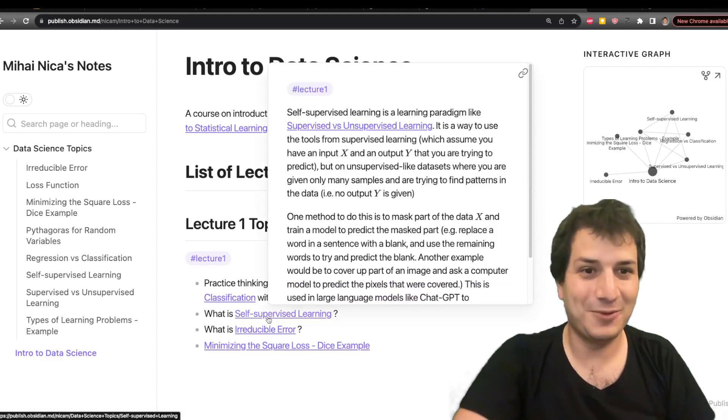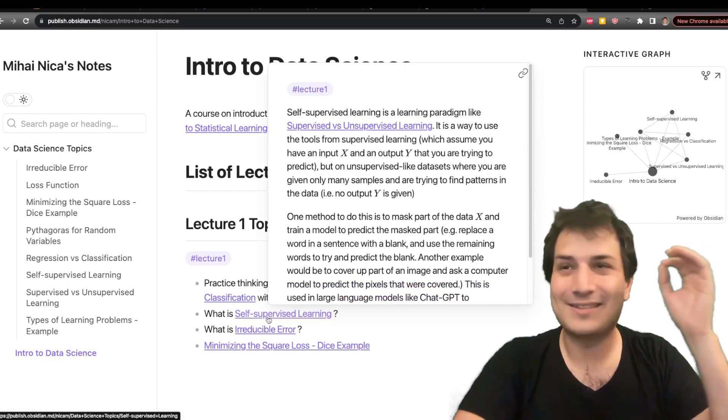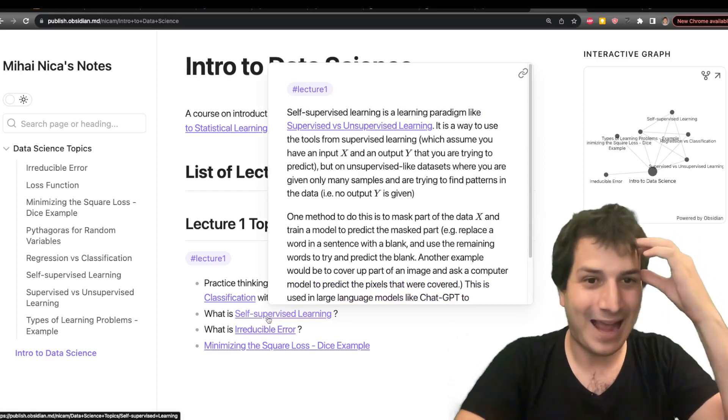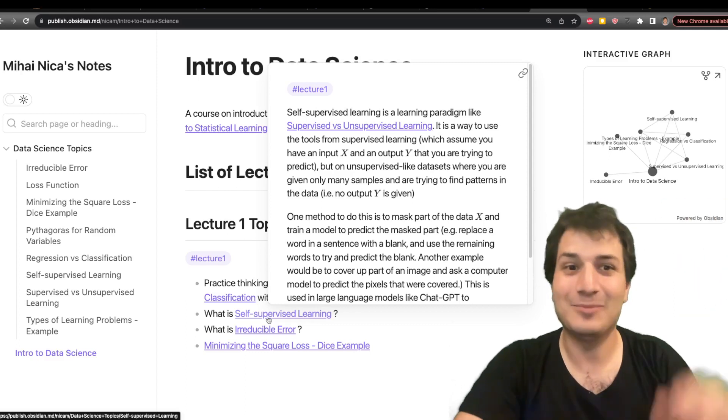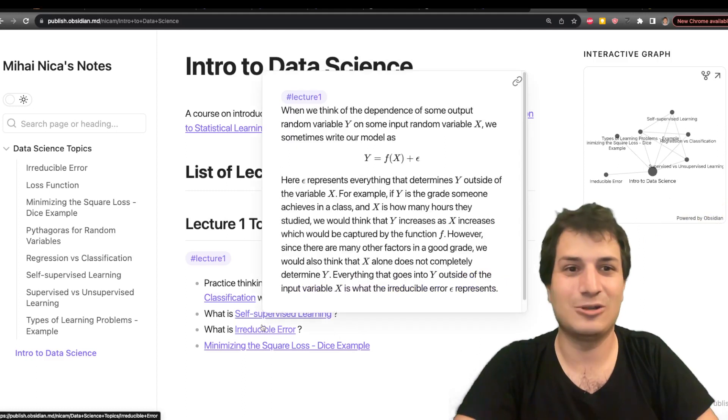I did make a goof in the lecture so if you watch the lecture watch out for this goof that I made. I called self-supervised learning I called it semi-supervised learning. So I remember the acronym SSL correctly but I filled in the first S wrong. So the thing I was talking about was self-supervised learning.